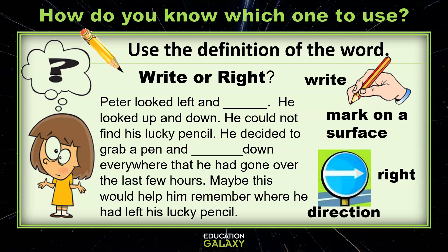Let's look at our first sentence: 'He looked left and right.' Which 'right' goes in that blank? If you chose R-I-G-H-T, you are correct, because that is a direction. Now let's look at the second sentence: 'He decided to grab a pen and write down everywhere that he had gone.' Which 'right' goes in that blank? If you chose W-R-I-T-E, you are correct, because Peter is writing something down. Good job! Let's try another one.